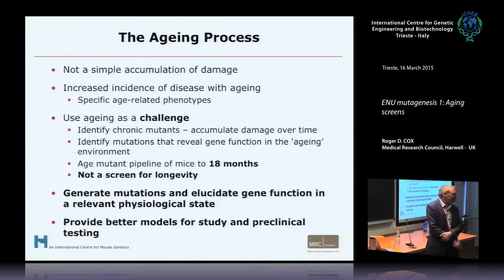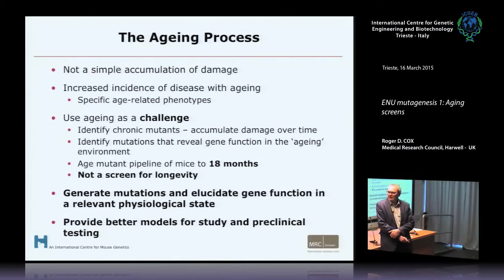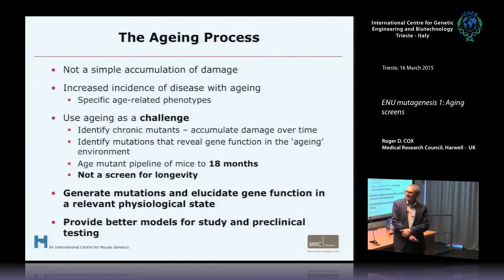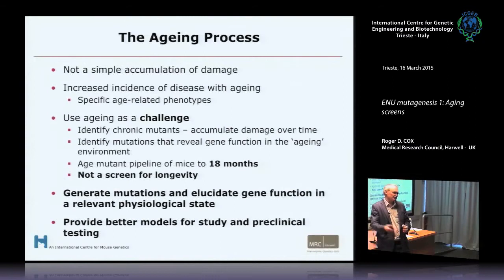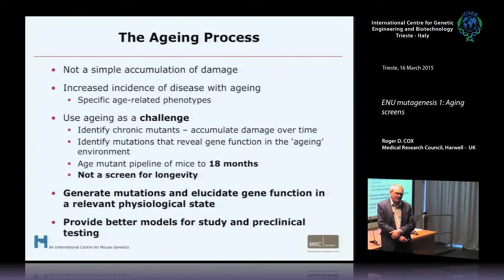Aging mice — and there was a question this morning about aging and how important it was. It is important; it is a factor. The aging process is a complex one. Disease incidences vary with age, and there are specific age-related diseases and phenotypes. So having an aging screen that tries to capture those later onset diseases is important. We're using aging as a challenge in order to identify mutants that reveal gene function in the aging environment — so we're interested in genes that predispose you to disease as you age.